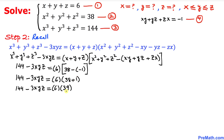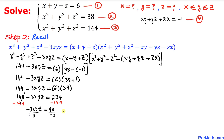So 38 minus negative one gives 39, and 6 times 39 is 234. We have 144 − 3xyz = 234. Subtracting 144 from both sides gives −3xyz = 90, so xyz = −30. We label this as equation number five.